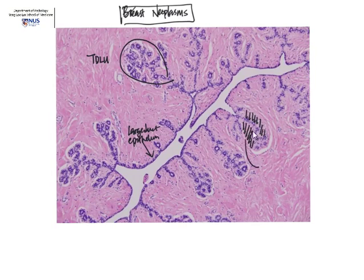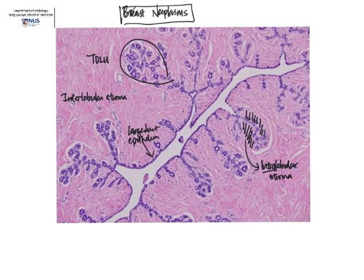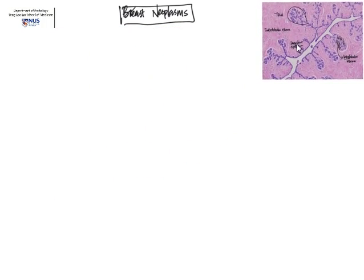The pinkish stroma surrounding the lobules is known as the intralobular stroma, and this is important because it is the source of the fibroepithelial tumors in the breast, which we'll talk about later. And then we just have the non-specialized interlobular stroma between the lobules, which comprises fibrous tissue, adipose tissue, and blood vessels — you can imagine the tumors that can arise from the interlobular stroma.